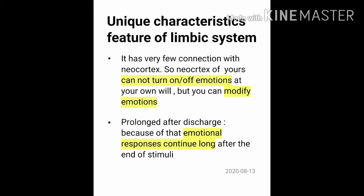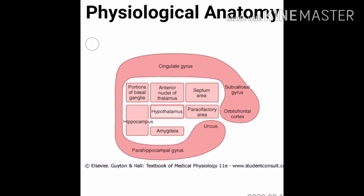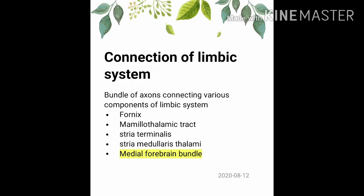In the physiological anatomy of the limbic system, the dark pink area shows the cortical structures of the limbic cortex, and the light pink boxes show the subcortical structures. Cortical structures include the orbitofrontal cortex, subcortical gyrus, cingulate gyrus, parahippocampal gyrus, and uncus. Subcortical structures include the septum area, para-olfactory area, anterior nucleus of the thalamus, hypothalamus, amygdala, portion of basal ganglia, and the hippocampus.